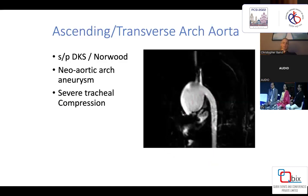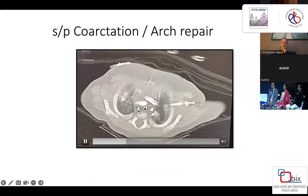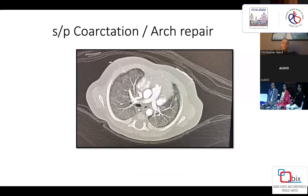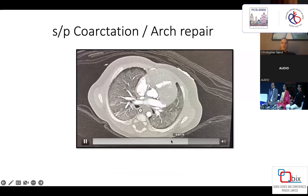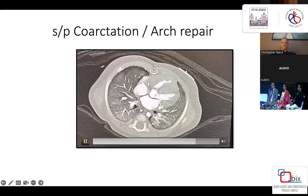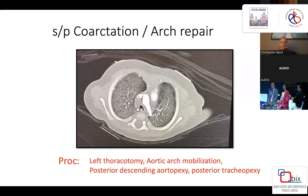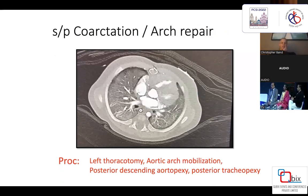Then we have lesions of the transverse arch — patients who have undergone a DKS and Norwood operation who have neo-aortic arch aneurysms, often resulting in severe tracheal compression. In one such case, we performed a valve-sparing aortic root repair, transverse arch reconstruction, and posterior tracheopexy with bronchoscopic guidance. A common anomaly after coarctation repair is significant disease at the left bronchus as the aorta crosses over. The procedures include left thoracotomy, aortic arch mobilization, posterior descending aortopexy, and posterior tracheopexy.